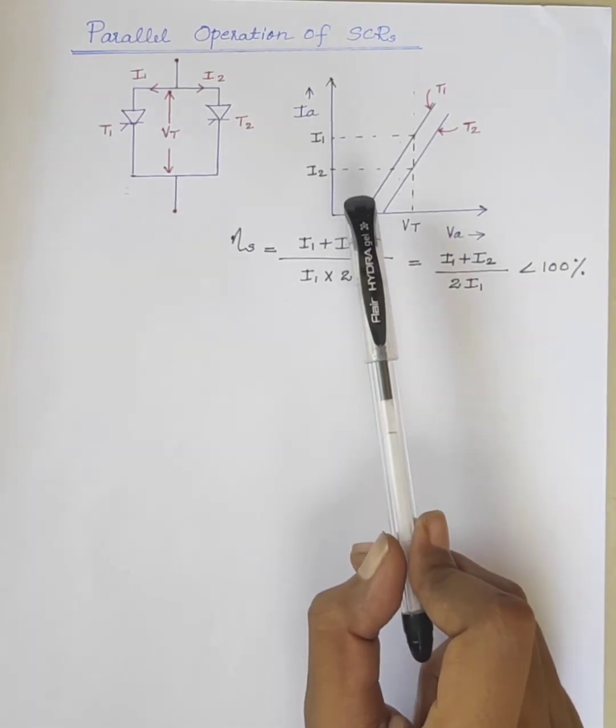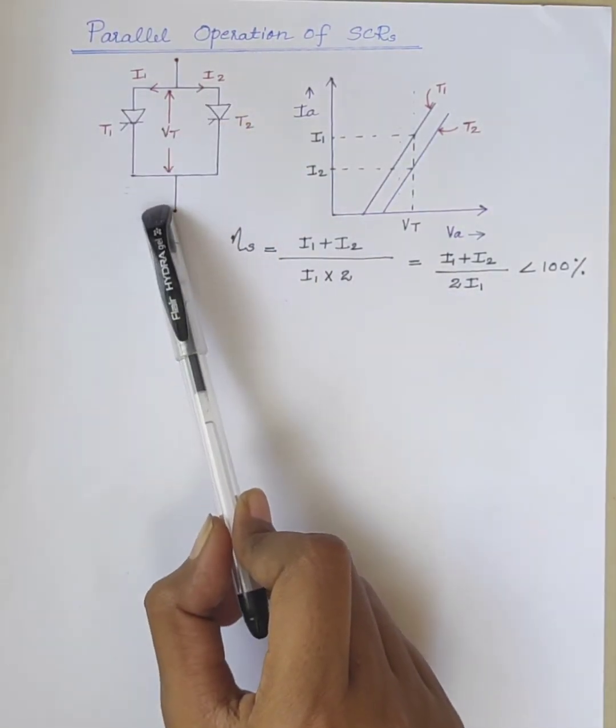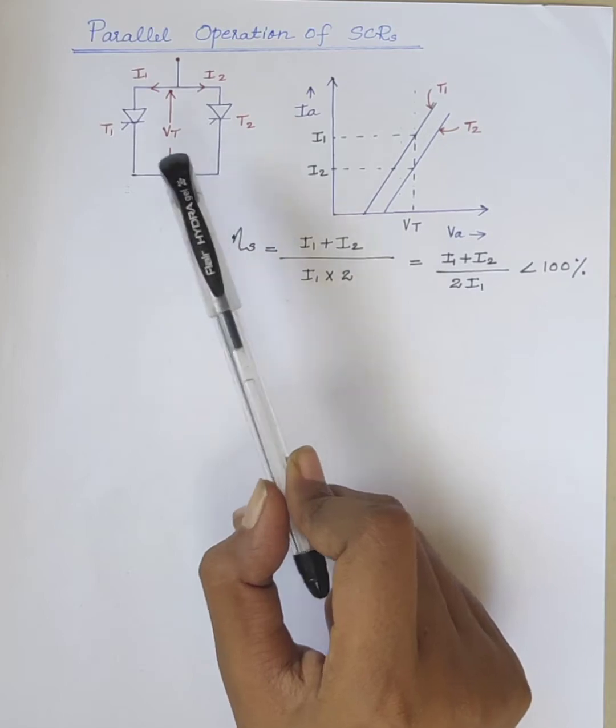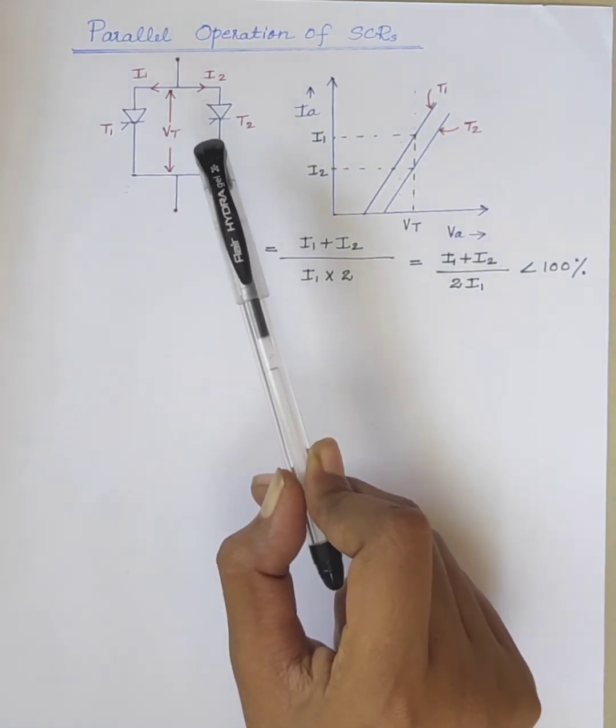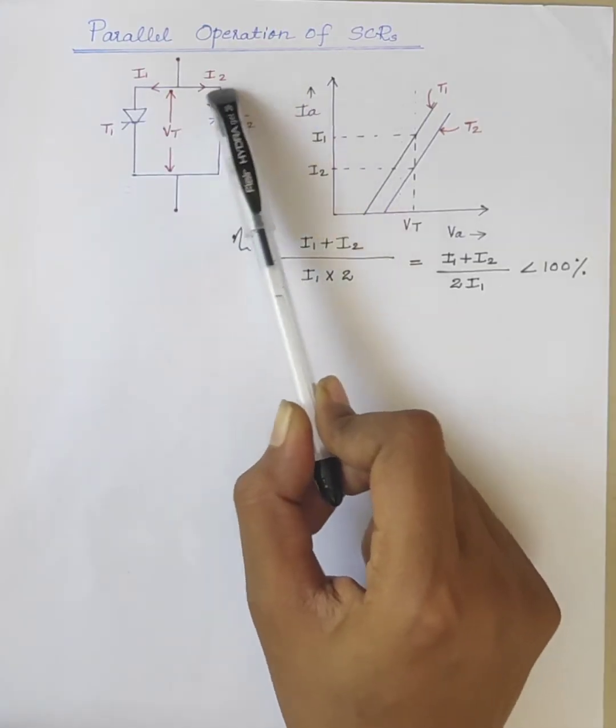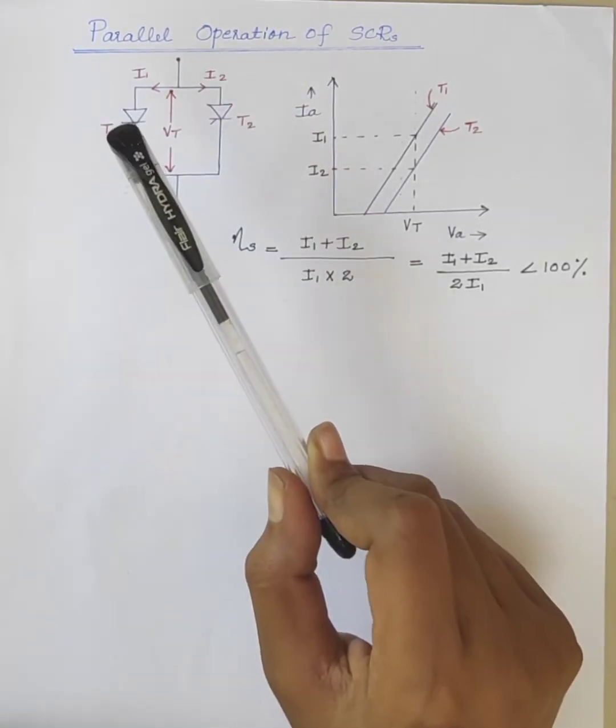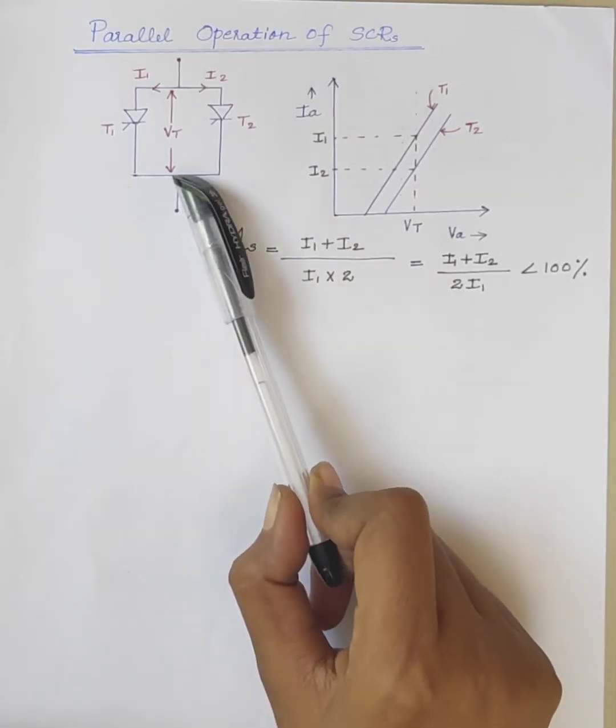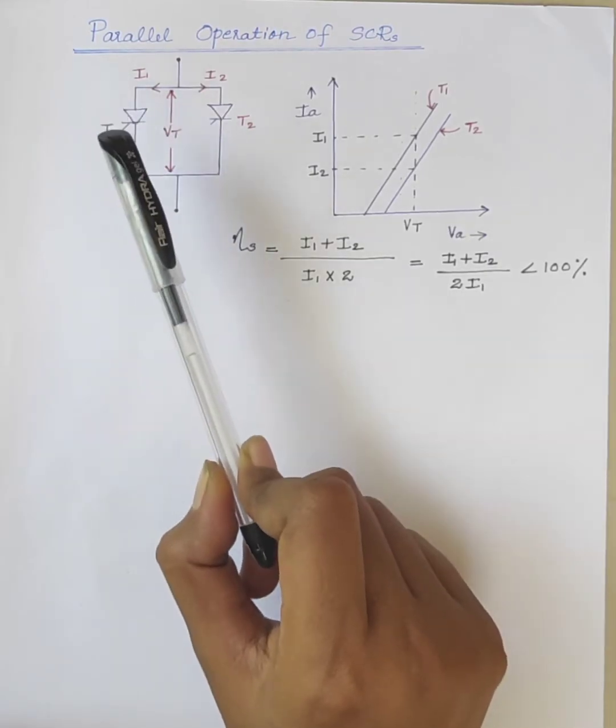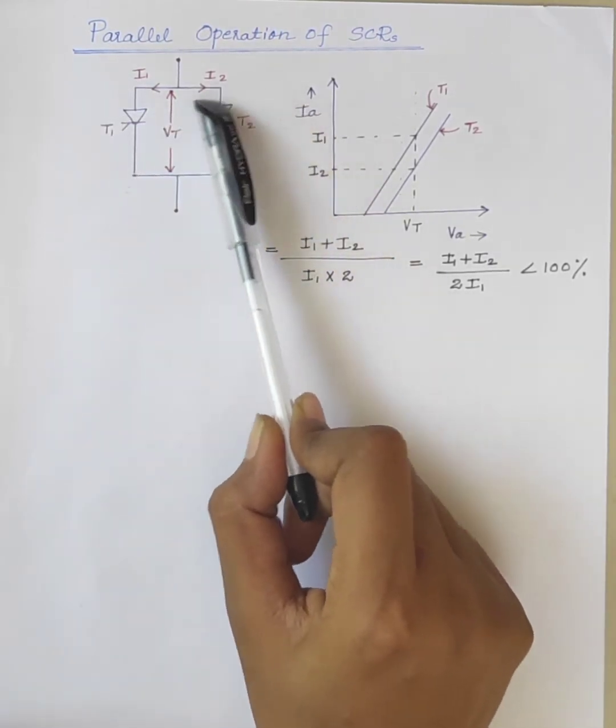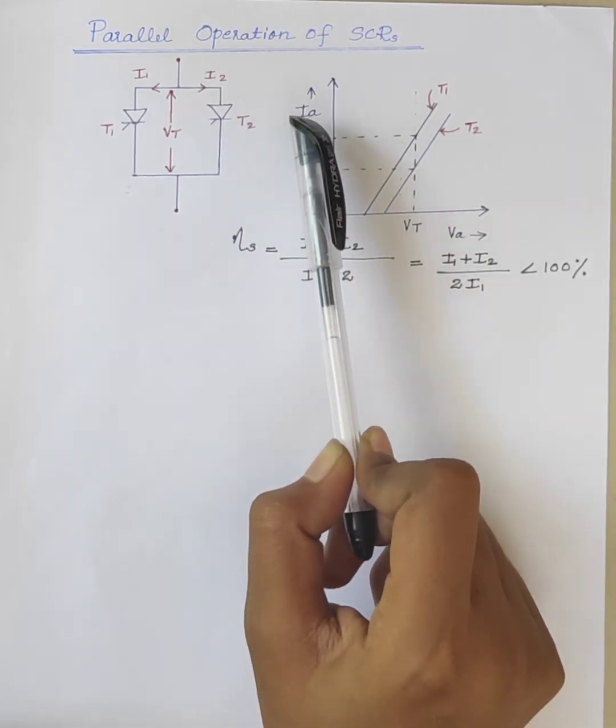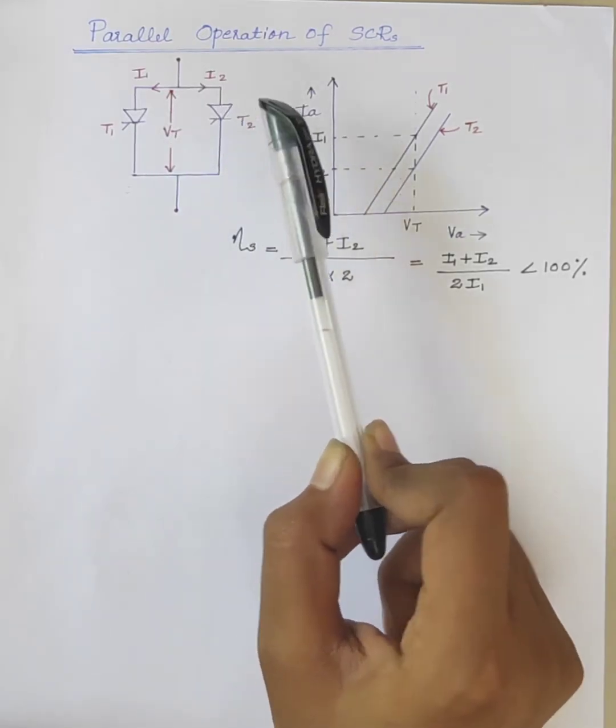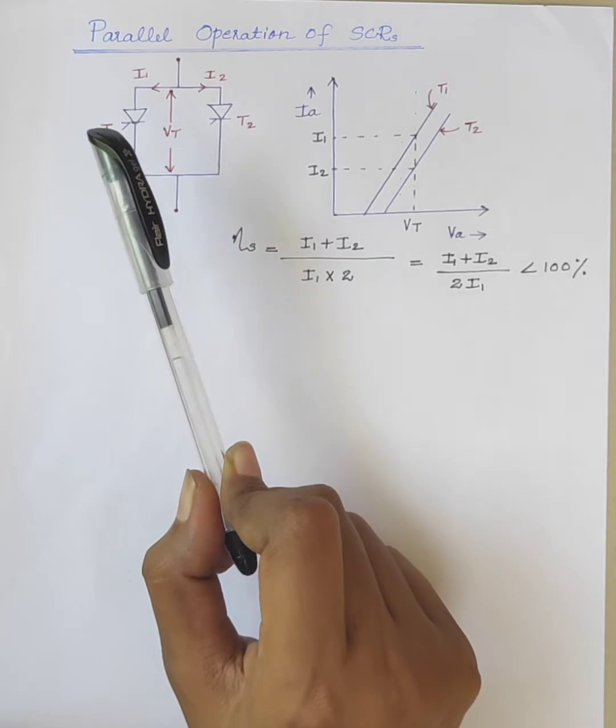For satisfactory operation of parallel connected SCRs in dynamic condition, they should get turned on and turned off at the same moment. But here, SCRs T1 and T2 show different turn on and turn off times. Let us assume that T1 has large turn on time whereas T2 has low turn on time. Under this assumption, T2 will turn on fast but T1 is likely to remain off.